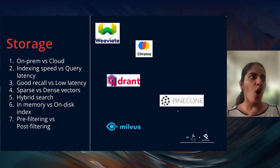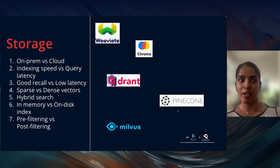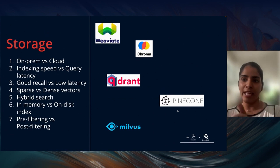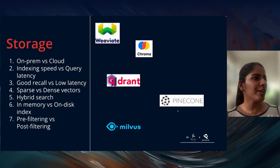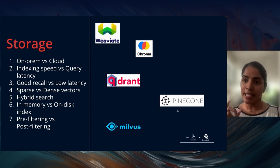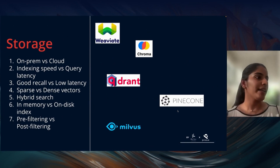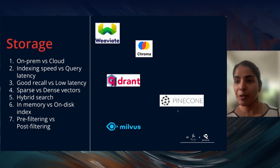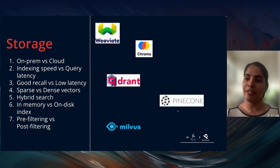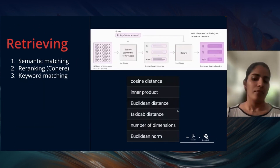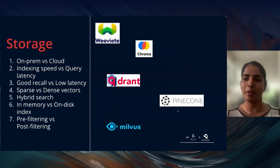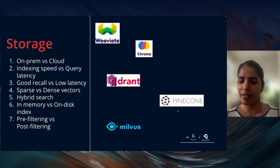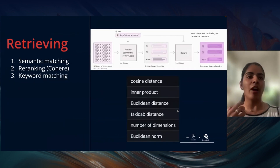When choosing a vector database, factors include on-prem versus cloud, indexing speed versus query latency, recall versus low latency, sparse/dense vectors, hybrid search (keyword plus semantic similarity), in-memory options, and whether the DB does pre-filtering or post-filtering with re-ranking. The logos shown are not exhaustive — there are more vector databases out there, and this is a rabbit hole you can go deep into.